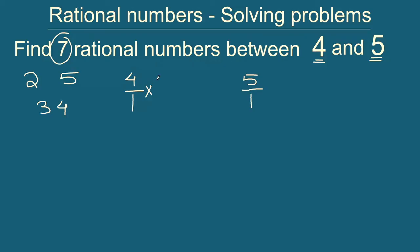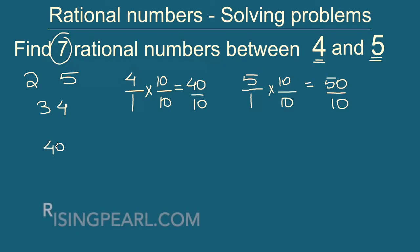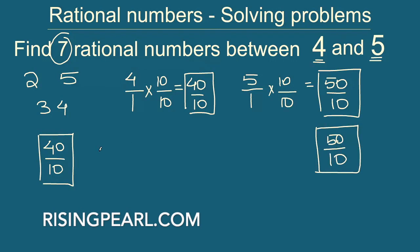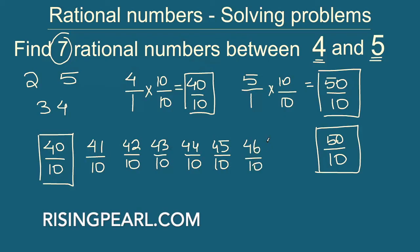What we do is multiply 4 by 1 with 10 over 10, and similarly multiply 5 by 1 with 10 over 10 — typically in multiples of 10. So 4 times 10 gives us 40 divided by 10, and 5 times 10 gives us 50 divided by 10. Remember 40 divided by 10 is simply the number 4 and 50 divided by 10 is simply 5 — we are just writing them in equivalent form. Now we can easily find 7 rational numbers between these two. We keep the denominator as 10 and go from 40 through 50: 41 by 10, 42 by 10, 43 by 10, 44 by 10, 45 by 10, 46 by 10, 47 by 10.